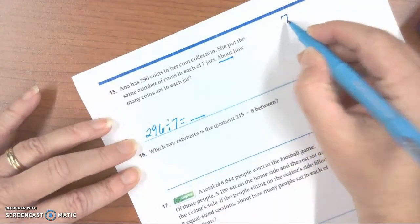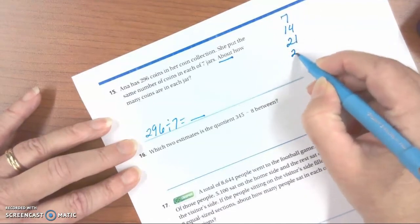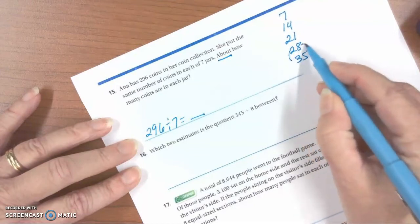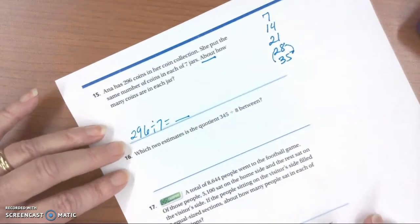If I count by 7s, I have 7, 14, 21, 28, 35. So I know my answer is going to be between these two multiples here.